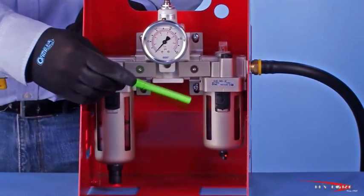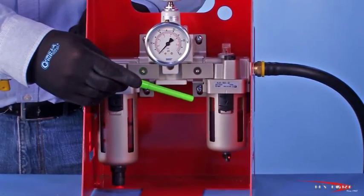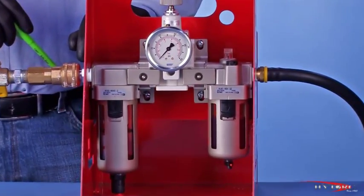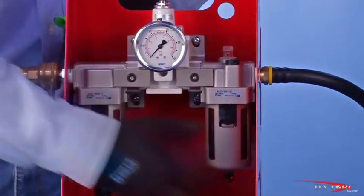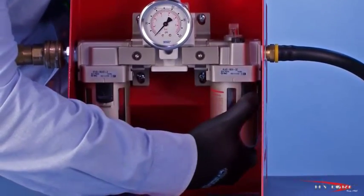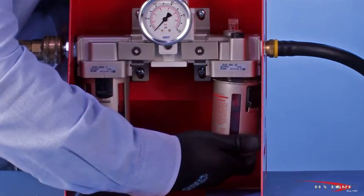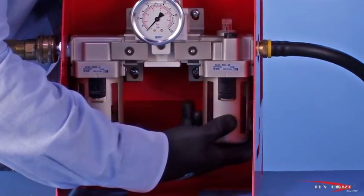The lubricator's job is to introduce a fine mist of oil into the air stream to lubricate and protect the internal parts of the tool against corrosion or damage. Depress the detent and twist the clear plastic reservoir to remove it. Fill it to the indicator mark with a quality air tool oil.